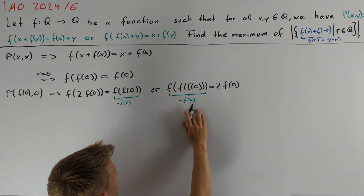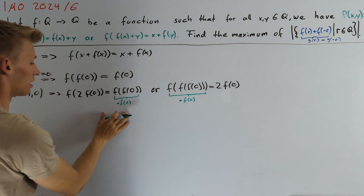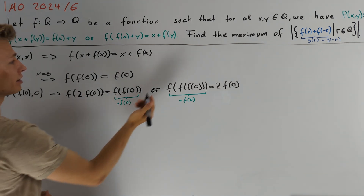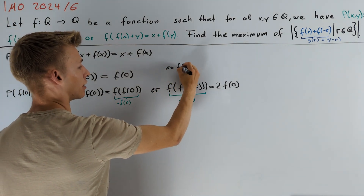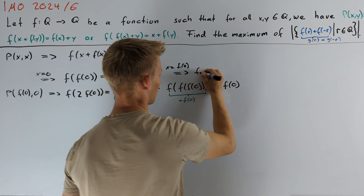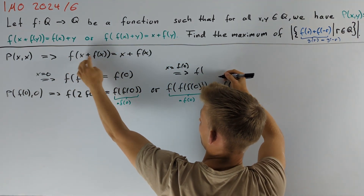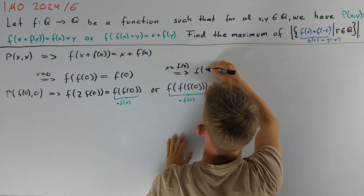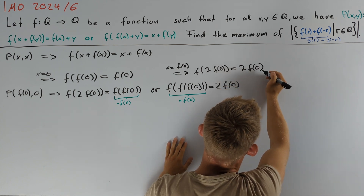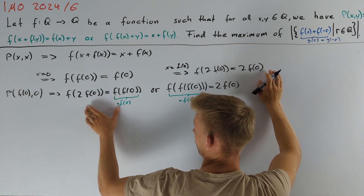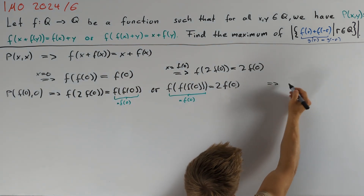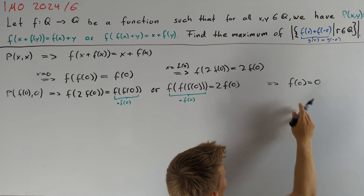The right equation directly implies f(0) = 0. For the left equation it is not so clear, so let's figure out more about f(2·f(0)). Taking x = f(0) in the first equation, we get f(f(0)) + f(f(0)) = f(0) + f(f(0)), and since f(f(0)) = f(0), this gives 2·f(0) = 2·f(0). Hence we also get f(0) = 0 for this first equation. In total, we conclude that f(0) = 0.